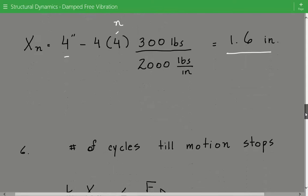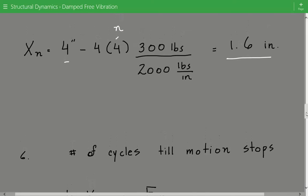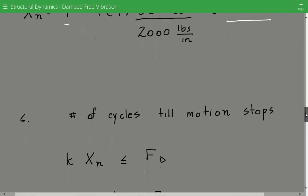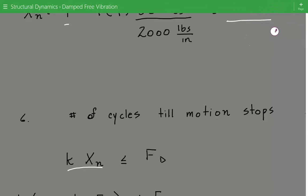And lastly we can calculate the number of cycles till the motion stops. The motion will end at some amplitude when the restoring force in the spring cannot overcome the frictional damping force. So the restoring force in the spring is equal to k, the spring stiffness, times some amplitude x sub n. And then we set that less than or equal to the frictional damping force.